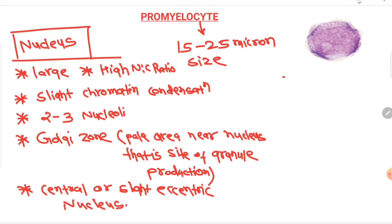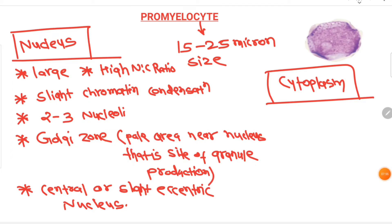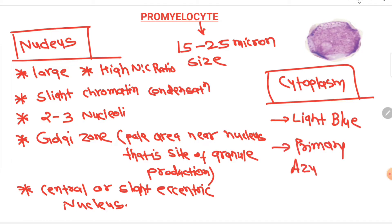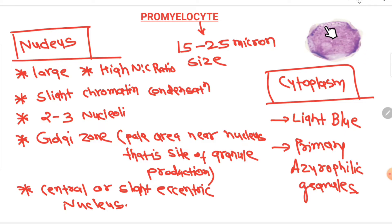The cytoplasm of the promyelocyte is light blue in color. From this stage, primary azurophilic granules will appear in the cytoplasm. That is the characteristic morphology of the promyelocyte, as you can see in this image.